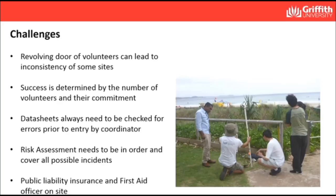Our data sheets need to be checked for errors — putting together this presentation revealed some errors, most importantly in our dune profiles. That means we have to go back and redo some baseline recordings for our dunes, using level surveys instead. In terms of risk assessments, we have an advantage through the university: public liability and insurance cover all our projects. We go through a thorough risk assessment before each event and always have first aid officers on board.